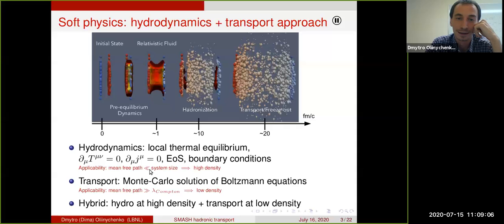Smaller than system size in a way implies high density, and at high density you solve hydrodynamic equations. In contrast, transport doesn't like high density because for transport applicability, the mean free path has to be larger than Compton wavelength. So transport prefers low density regions, which means that...